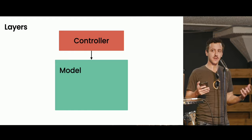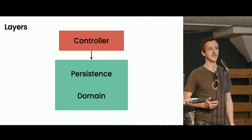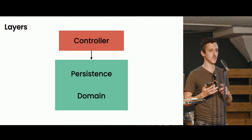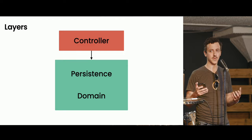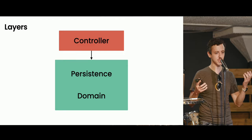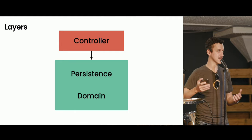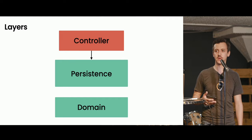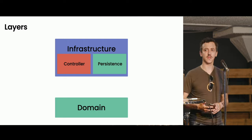We still have the problem of the massive model — it's a huge pain. It turns out models typically do two separate things: persistence — actually storing your objects in the database — and domain logic, your core business rules and domain objects. Early on it makes sense to have those tied together, but as the app gets more complex they drift apart and mapping them gets really painful. So we pull that out into its own layer — a domain layer — and then combine persistence and controllers into what we call the infrastructure layer.